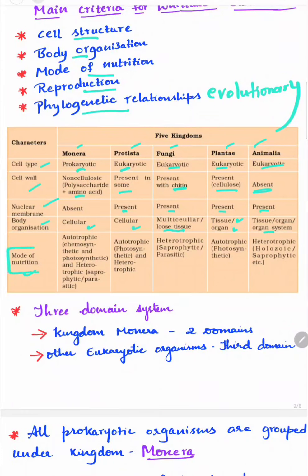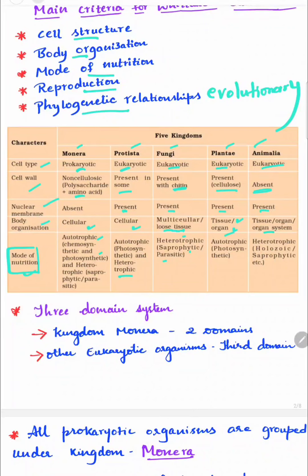Mode of nutrition in Monera is autotrophic — chemosynthetic and photosynthetic — or they may be heterotrophic such as saprophytes or parasites. In Protista, it is autotrophic (photosynthetic) and some are heterotrophic. Fungi are heterotrophic and saprophytic, depending on dead organisms, or parasitic on living organisms. Plantae is completely autotrophic. Animalia is heterotrophic — holozoic or saprophytic.